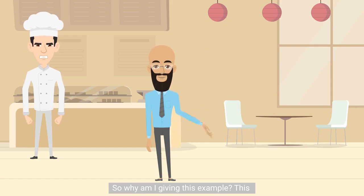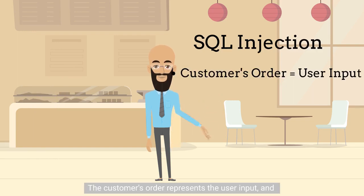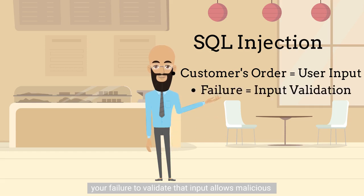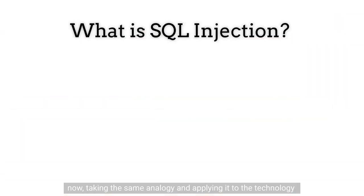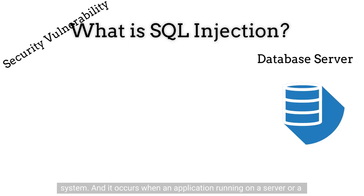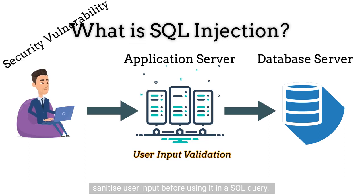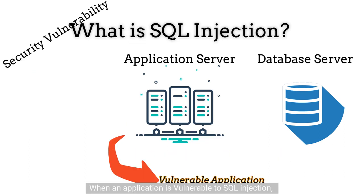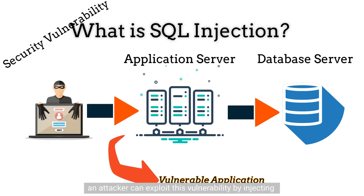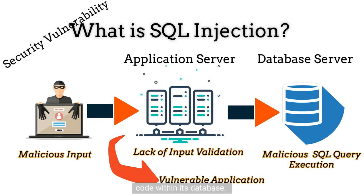So why am I giving this example? This demonstrates how SQL injection vulnerability works. The customer's order represents the user input, and your failure to validate that input allows malicious orders to be processed. Taking the same analogy and applying it to the technology world, a SQL injection is a type of security vulnerability that targets the underlying database management system, and it occurs when an application fails to properly validate or sanitize user input before using it in a SQL query. An attacker can exploit this by injecting malicious SQL code into user-supplied input fields, such as login forms or search boxes, and the vulnerable application then unknowingly executes the injected SQL code within its database.